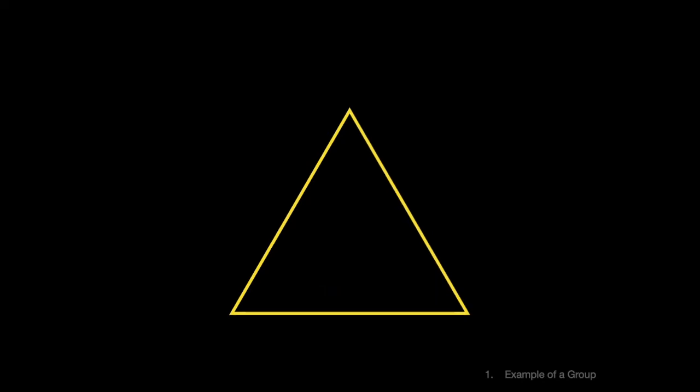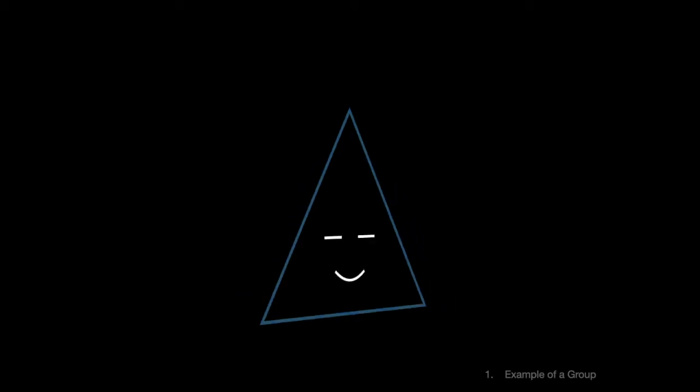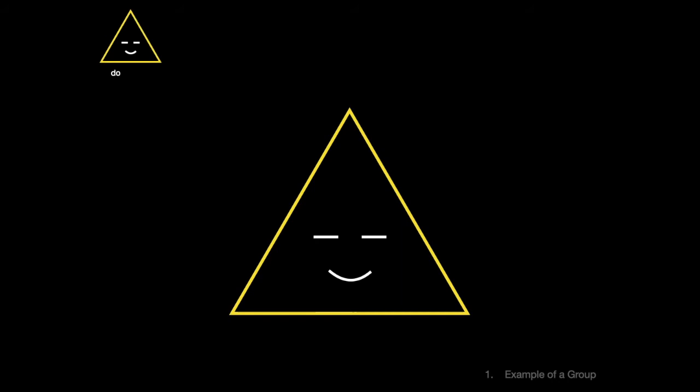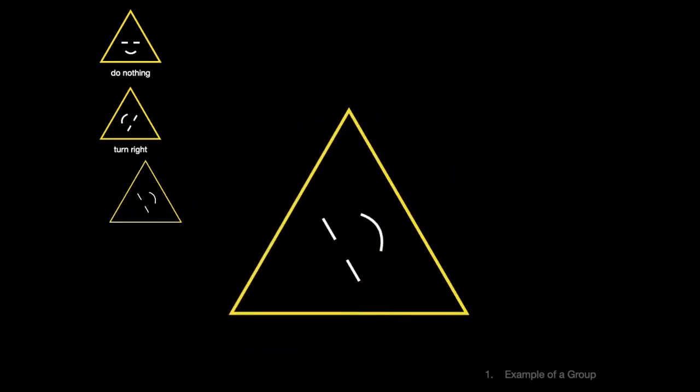The answer? Six. Let's count them. To help us keep track, I'll draw a smiley face here on the front side, which will have a yellow border. If we count doing nothing, that's one, then we have two rotations, right and left.